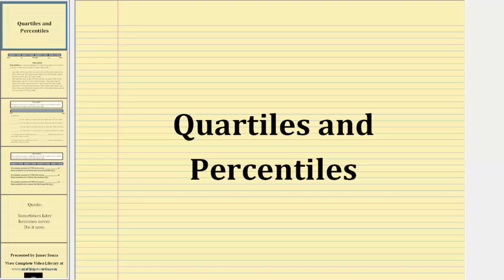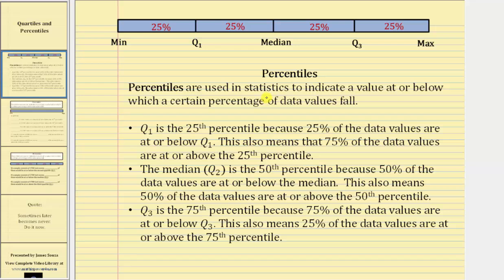Welcome to a lesson on quartiles and percentiles. Percentiles are used in statistics to indicate a value at or below which a certain percent of data values fall. For example, quartile one is the 25th percentile because 25% of the data values are at or below Q1. This also means that 75% of the data values are at or above the 25th percentile.